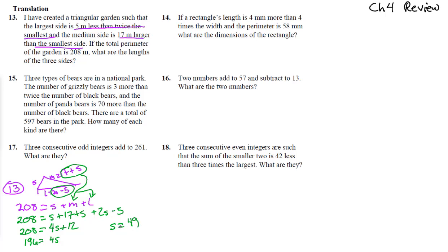If the small side is 49 we're not done yet. The medium side is 17 plus s, so that's 66. The large side is 2 times 49 minus 5, which is 93. These are in meters — so the small side is 49 meters, medium is 66 meters, and large is 93 meters.